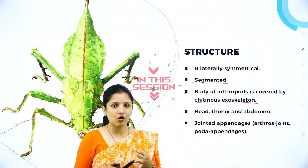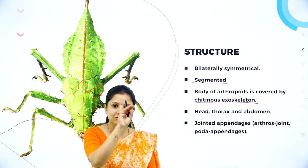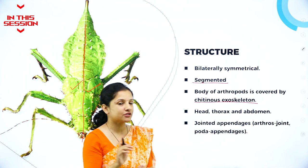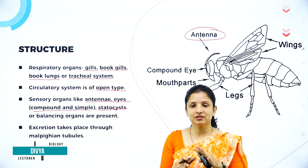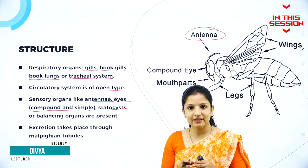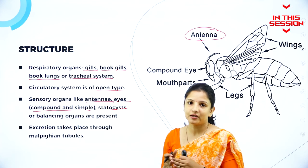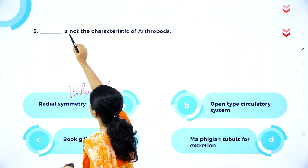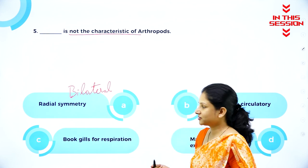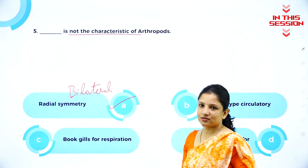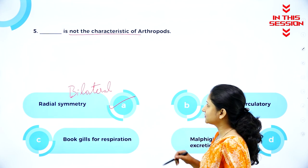Arthropods have jointed appendages. Prawns are covered by a shell-like structure, which is an exoskeleton made up of chitin. These statocysts, or balancing organs, help organisms balance during flight or when sitting on a fragile surface. Be careful with the question: 'Dash is not the characteristic of Arthropods.' Radial symmetry is not the characteristic because Arthropods exhibit bilateral symmetry. So the right answer here is A.